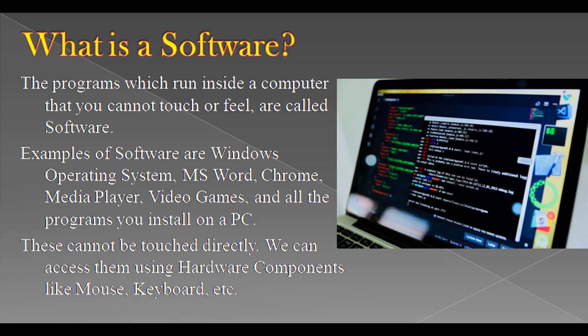What is software? The programs which run inside a computer that you cannot touch or feel are called software. Examples of software are Windows Operating System, Microsoft Word, Chrome, Media Player, Video Games, and all the programs you install on a PC. These cannot be touched directly; we can access them using hardware components like mouse, keyboard, etc.